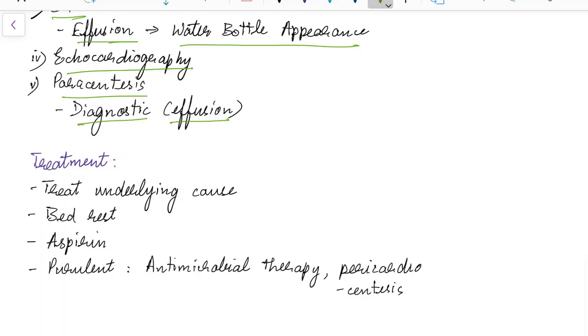How do you treat a case of acute pericarditis? We have to treat the underlying cause. Bed rest and aspirin should be given to the patient. In case of purulent pericarditis, antimicrobial therapy and therapeutic pericardiocentesis can be done. If you have any suggestions please let me know in the comment section.